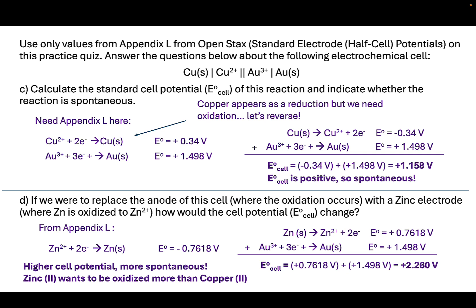In other words, zinc wants to be oxidized more than copper. Therefore, when we use it instead of copper, it will be a more spontaneous electrochemical reaction. We'll get more energy per electron out of the electrochemical cell assembled with zinc compared to assembled with copper as the anode.